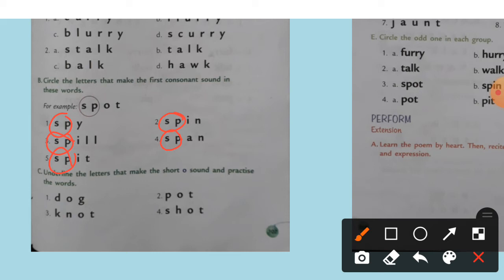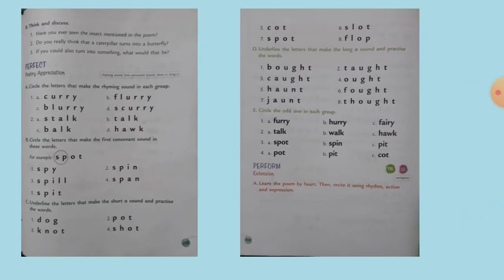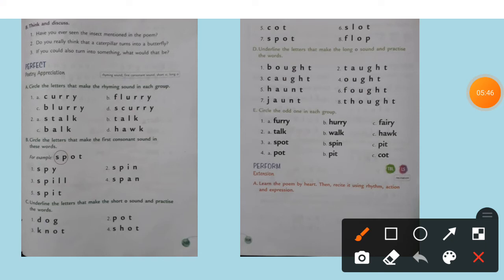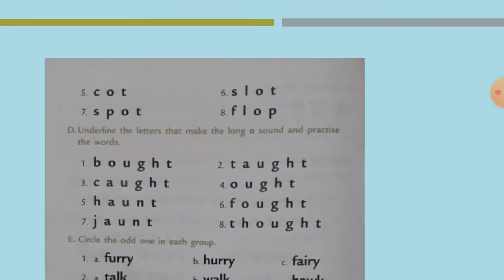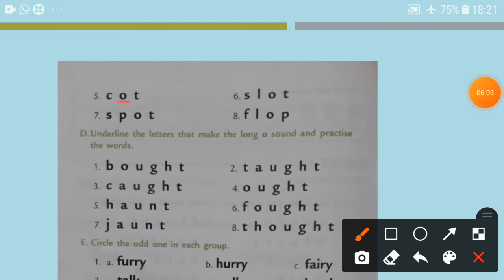C. Underline the letters that make the short O sound and practice the words. O sound is very easy. Dog, underline D-O-G. Pot, P-O-T. Knot, O sound. Shot, O sound. Cot, O sound. Slot, O sound. Spot, O sound. Flog, O sound.